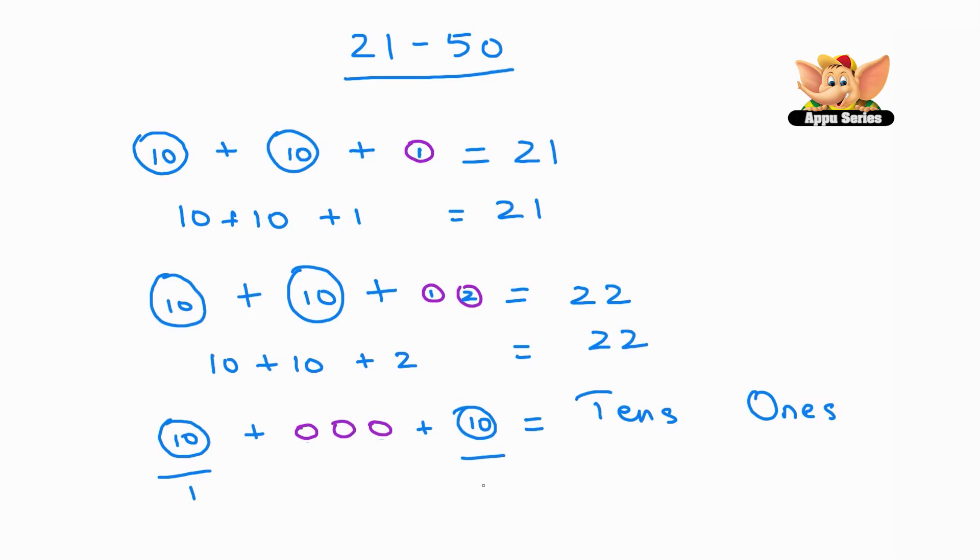We have another 10 here. So, we have 2 tens. So, now we go back and we see we have 3 single grapes. So, we write 3 ones here. So, let us write that down. What is 2 tens plus 3 ones? That's 23.